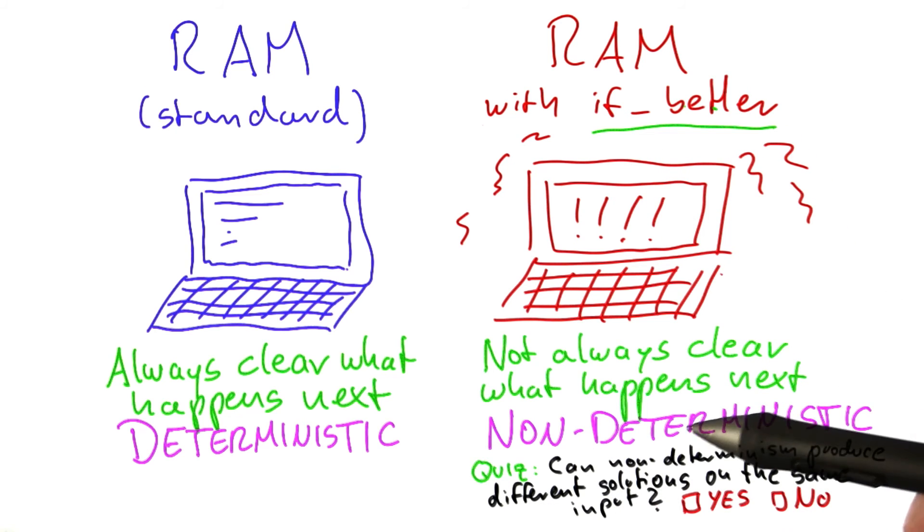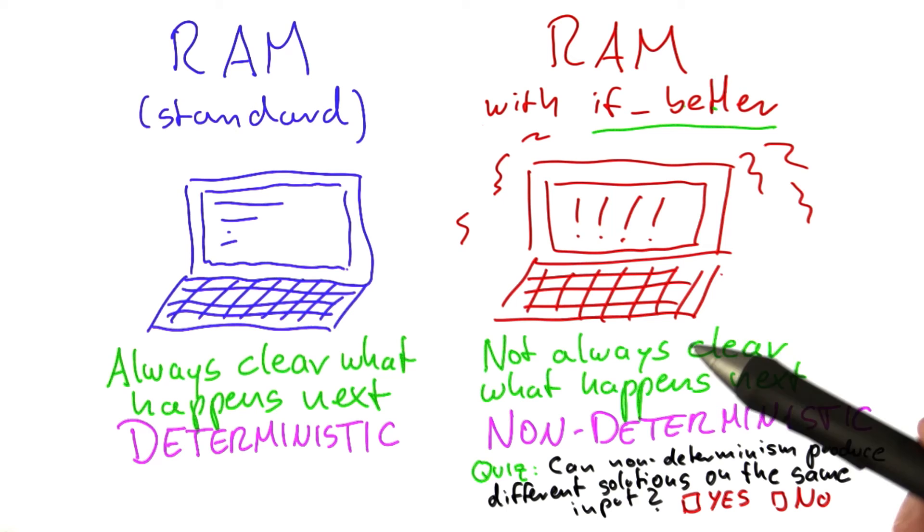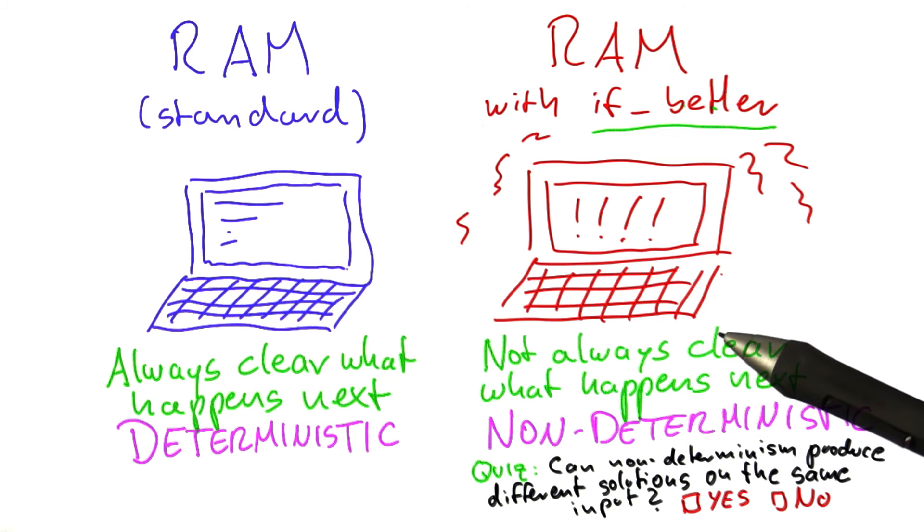So what I would like you to think about is, if you're using the if better function in a program and we run the same program code multiple times, can we get different solutions if we are running it on the same input? Or will we always get the same solution? So if you think that non-determinism can produce different solutions on the same input using the same code, then please check yes, otherwise check no.